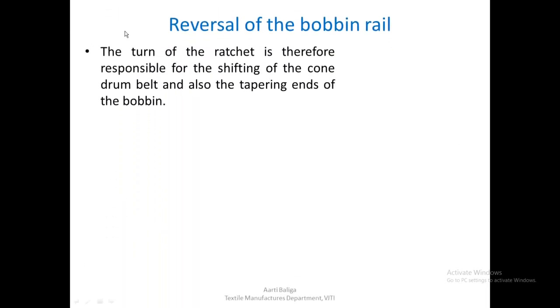With this we have seen two functions already. The turn of the ratchet is therefore responsible for shifting the cone drum belt and also for the tapering ends of the bobbin. Both mechanisms have been seen.